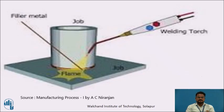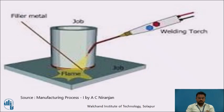Looking at the diagram, before applying flux we must clean all dirt and grease from the surface of both jobs. Then we apply the flux and give a high temperature flame through the welding torch. You can see the flame is created between the two jobs and only the flux melts — the base metal jobs do not melt. The filler metal is placed between the two jobs and the high temperature flame from the welding torch joins the two base metals by the brazing process.